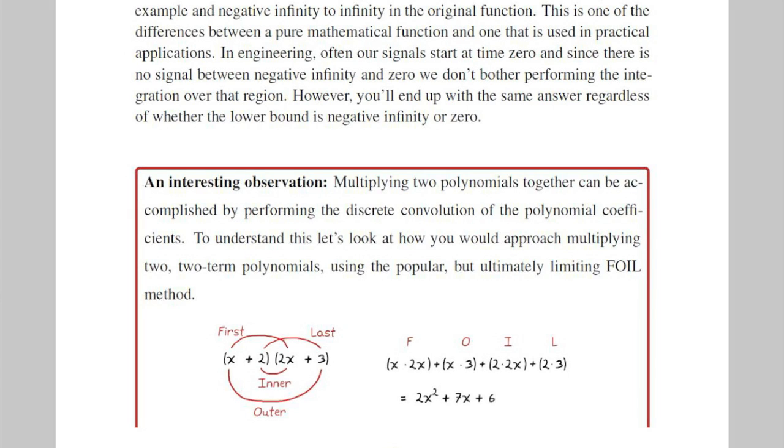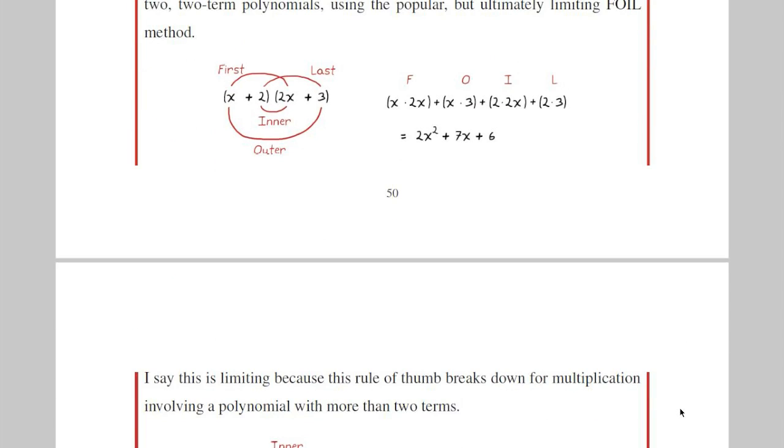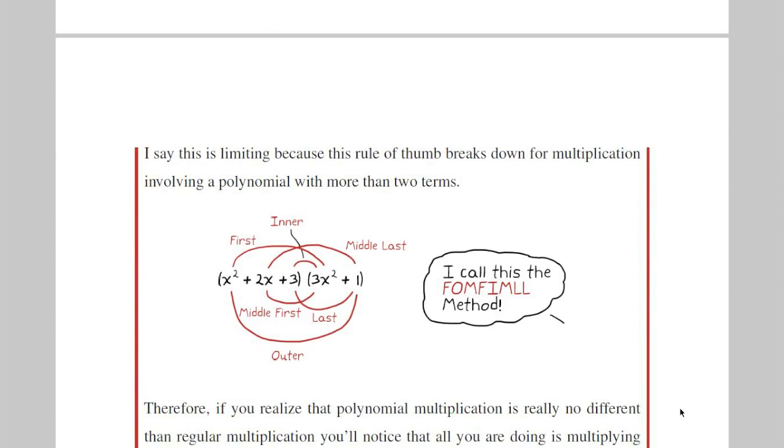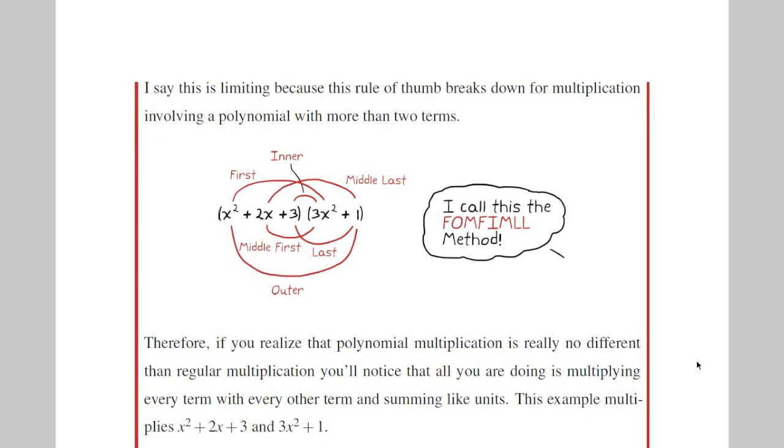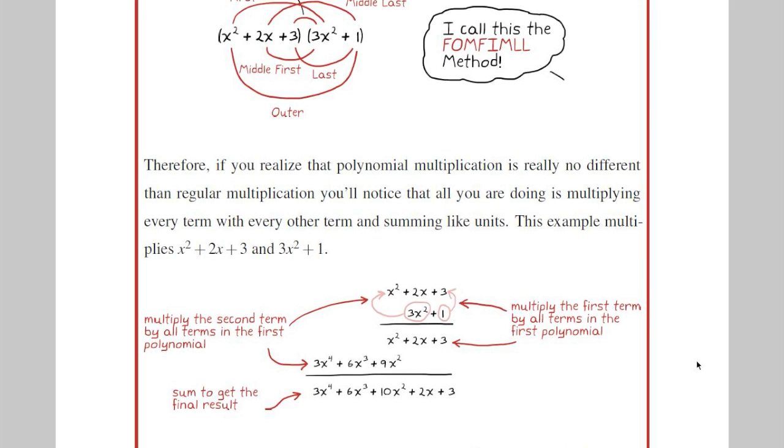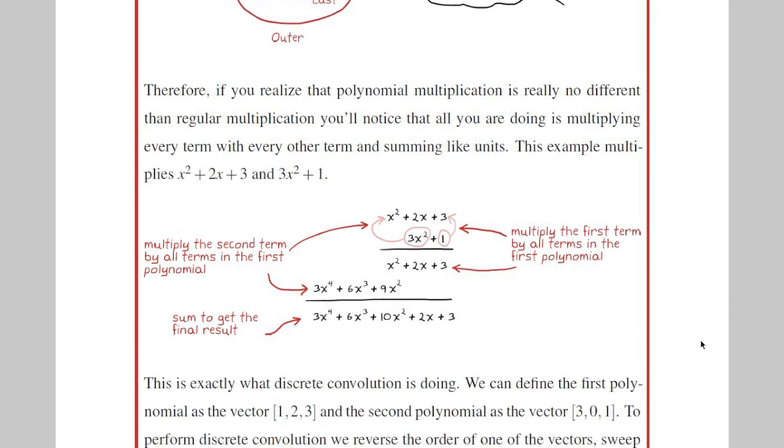Remember how you were taught the FOIL method for multiplying two two-term polynomials? You multiply the first term, then the outer terms, then the inner terms, and finally the last terms, and you get the result. This is kind of neat and easy to remember, but you'll find that it quickly breaks down when you try it with polynomials with more than two terms. So then you're taught that you can multiply two polynomials of any degree using a method very similar to multiplication of large scalars. But this is actually discrete convolution.